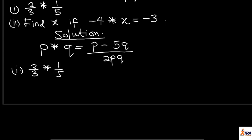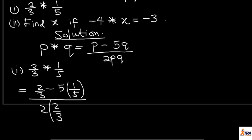So, what do I do? I simply will substitute it into this operation and I will have, this will simply give me, my P here is 2 over 3, I have 2 over 3 minus 5 into brackets. My Q here is 1 over 5, all over 2PQ, that is my P, which is 2 over 3 times my Q, which is 1 over 5. Simplifying this further,